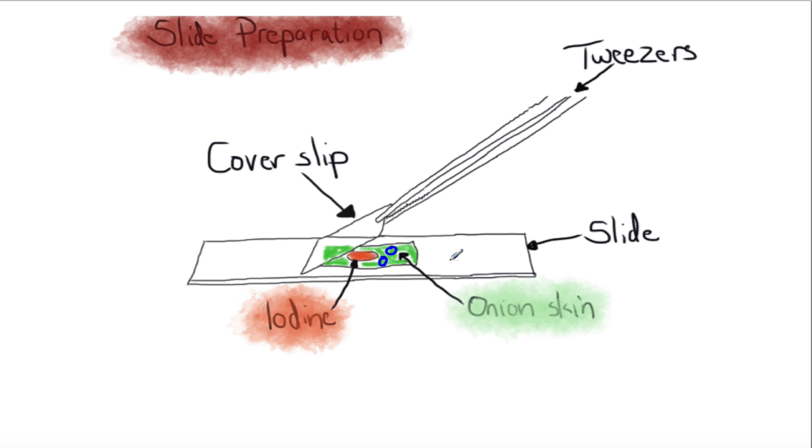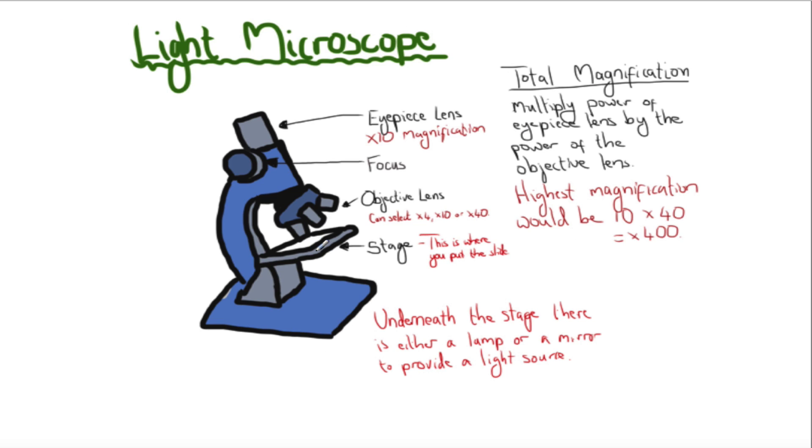If you do the cheek cells practical, it's the same: take a scraping of your own cheek cells, dispose of the cotton buds in disinfectant, wipe the cotton bud on the slide, use a different stain called methylene blue, put the cover slip down, and view it through the microscope. When using the microscope, put the slide on the stage, start on the lowest setting on times 4, then use the coarse focus—a larger wheel—and a smaller one for fine focus. Find it on its lowest setting and turn up to the middle setting.